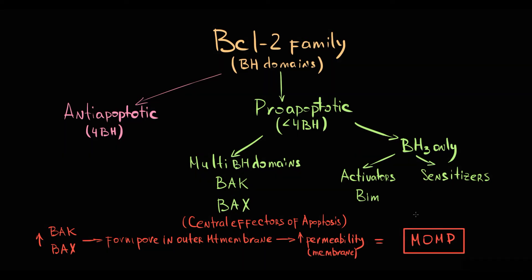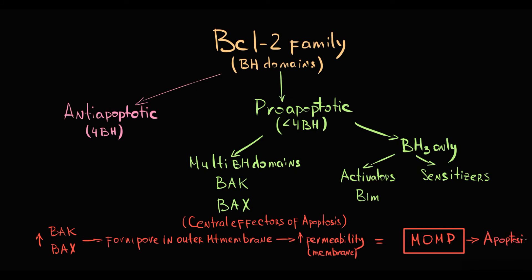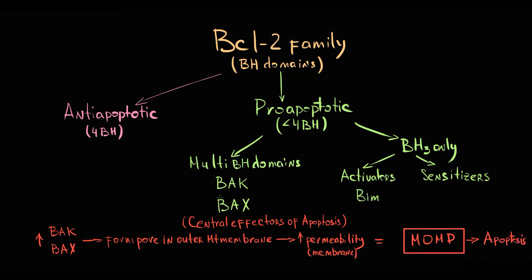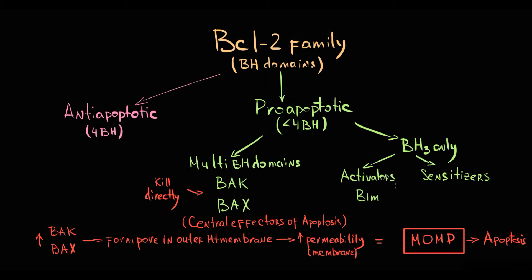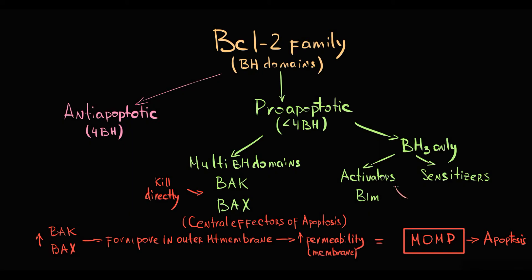As we will see further, mitochondrial outer membrane permeabilization leads to cytochrome C release and apoptosis. So we can say that once multi-domain proteins such as BAX and BAK are activated, they kill mitochondria directly and thereby directly induce apoptosis. In contrast, BH3-only proteins cannot kill mitochondria directly, but they can help multi-domain apoptotic proteins to do so.